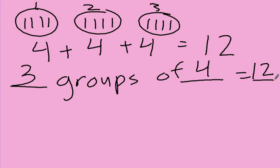Now, we can use these numbers, these groups, and make multiplication sentences. There are two different ones we can make. The first one: I can take how many groups I have first — I have three groups — so I can say three, and then multiply it by how much I have in each group. I have four in each group. Three times four. Guess what three times four is? It is twelve.